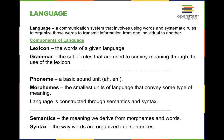Language is a communication system that involves using words and systematic rules to organize those words to transmit information from one individual to another. All languages can be broken down into smaller components. The lexicon of a language is the words of that language. Grammar is a set of rules used to convey meaning through the use of the lexicon.